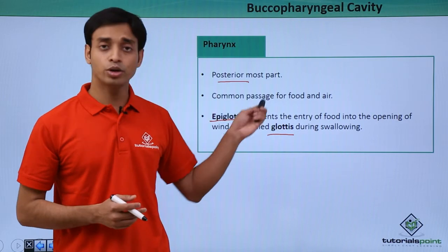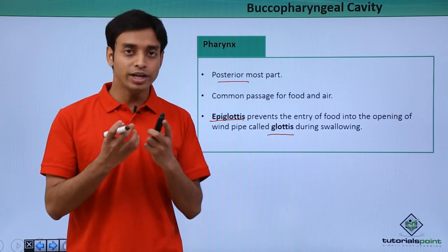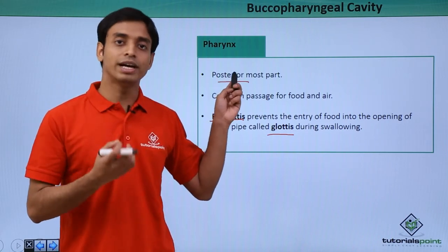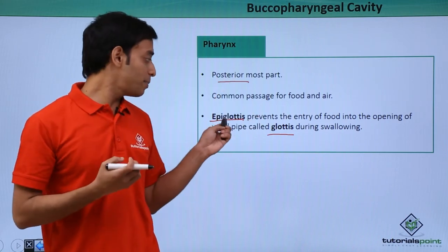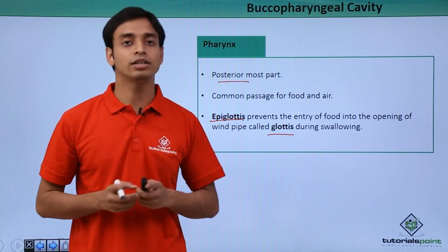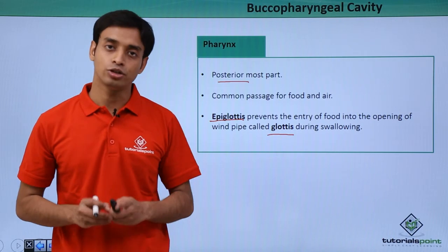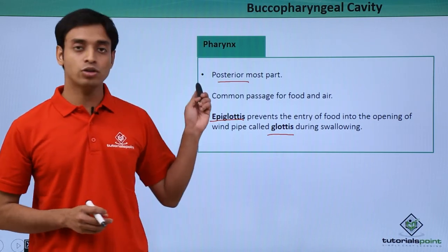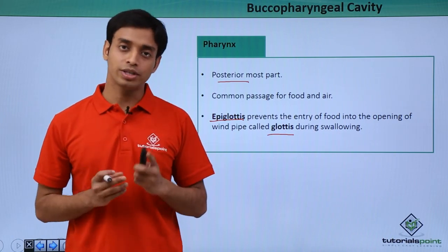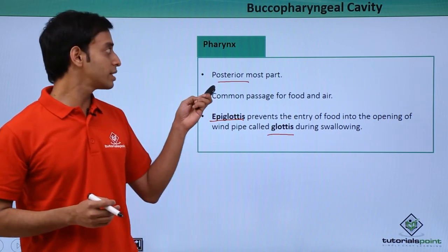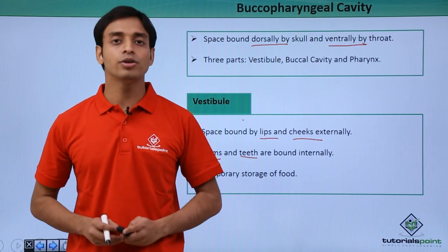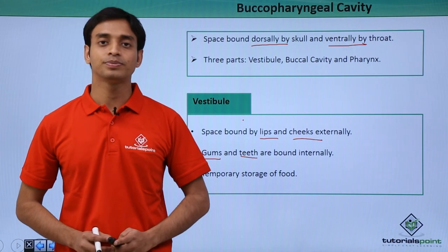It is always recommended that we should not talk while eating food, because if you talk while eating, air is also moving into the pharynx along with food, and the epiglottis may be displaced, allowing food to enter the windpipe and causing choking. In this video we have talked about the buccopharyngeal cavity and its three important portions: the vestibule, the buccal cavity, and the pharynx.